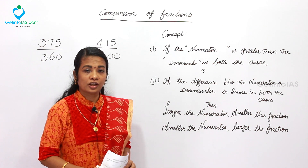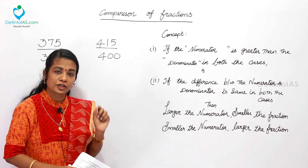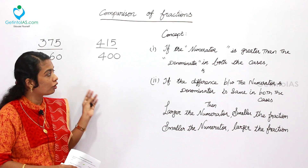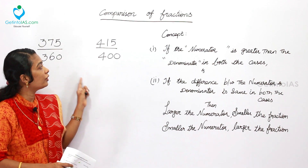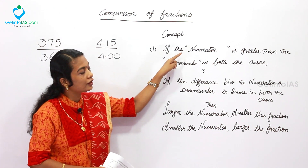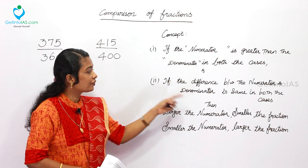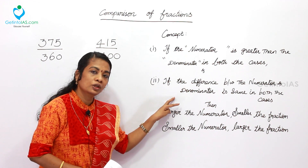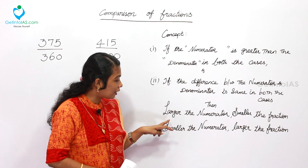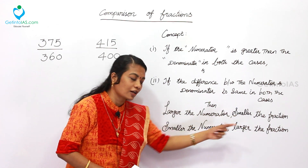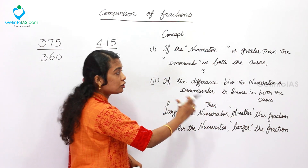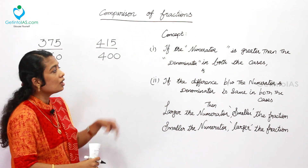In the previous concept, the denominator was greater and the difference was the same. Now Concept 2 applies when the numerator is greater than the denominator in both cases. If the numerator is greater in both and the difference is the same, you apply the reverse rule: larger the numerator, smaller the fraction; smaller the numerator, larger the fraction. Only this part is changed.